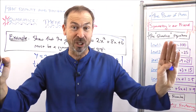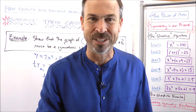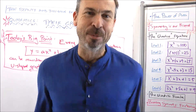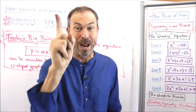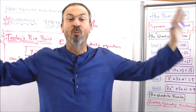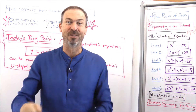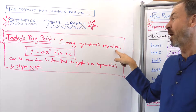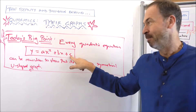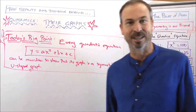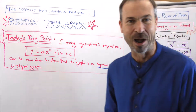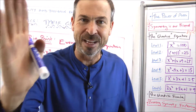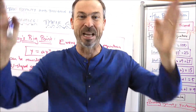That's the big point of today's lecture. This entire lecture was leading up to one big point that will make graphing quadratics ridiculously easy. Every quadratic equation — y equals ax squared plus bx plus c — can be rewritten in a form that shows its graph really is a symmetrical u-shaped graph. Once we know everything is going to be a symmetrical u-shaped graph, symmetry is our friend and graphing becomes ridiculously easy. The power of symmetry — the power of thinking like a mathematician.